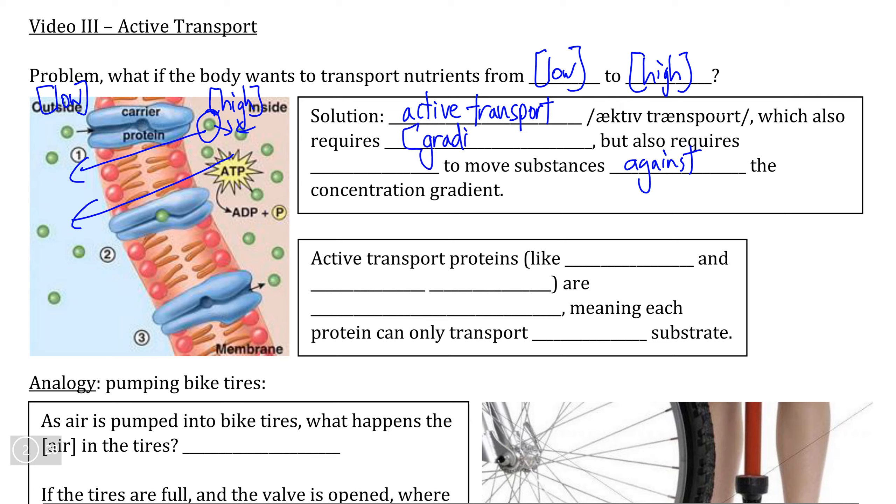Active transport requires there to be a difference in concentration between two sides, usually outside a cell and inside the cell. However, the other requirement for active transport is tipped off by the presence of the word active.